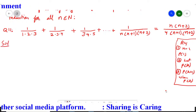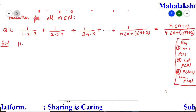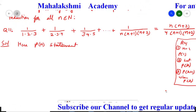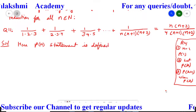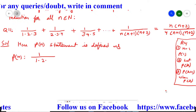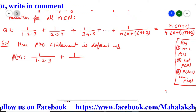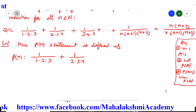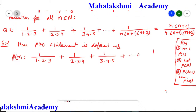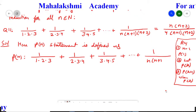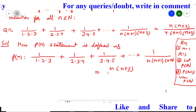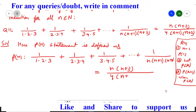We will start. First, we assume the given mathematical statement as Pn. The statement Pn is defined as: 1/(1·2·3) + 1/(2·3·4) + 1/(3·4·5) + ... extended up to 1/(n·(n+1)·(n+2)), where the dot means multiplication.